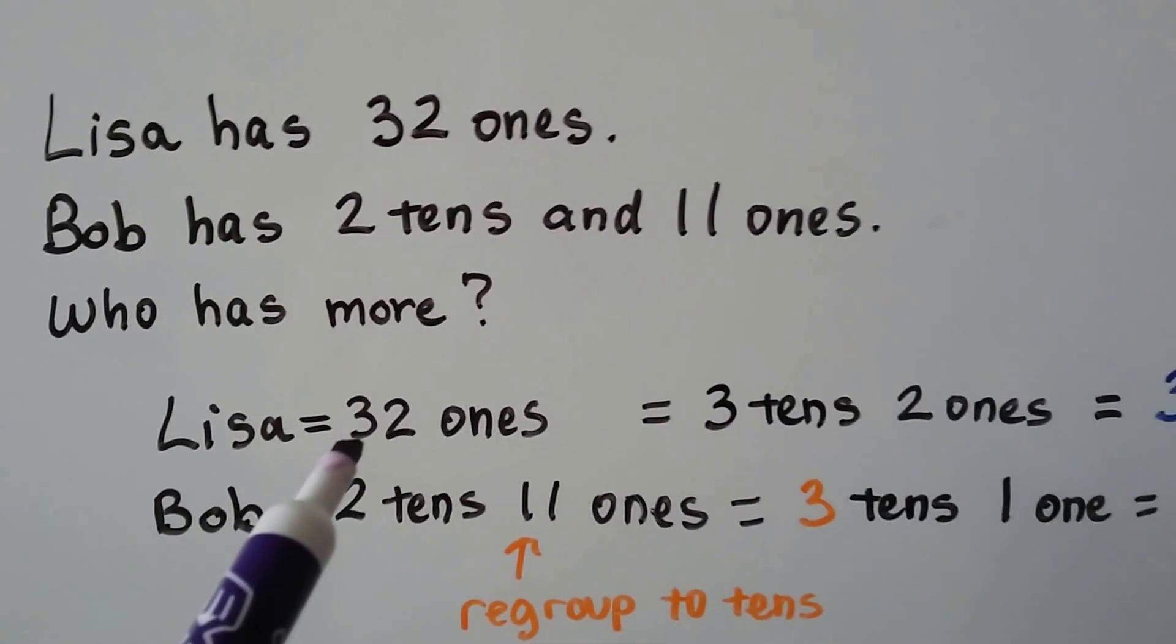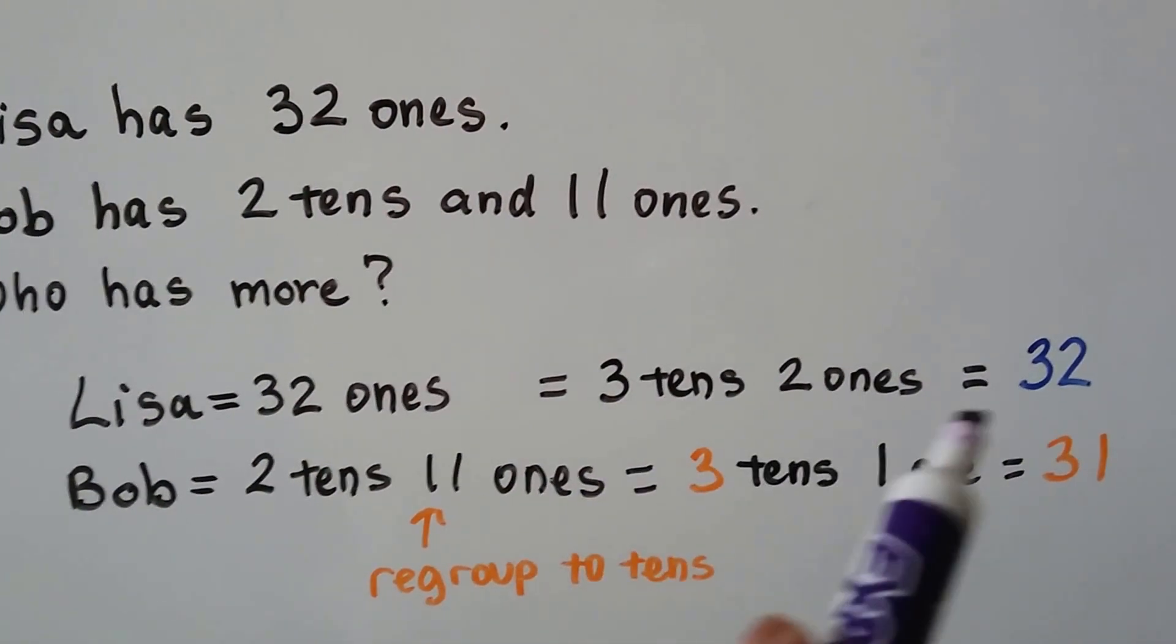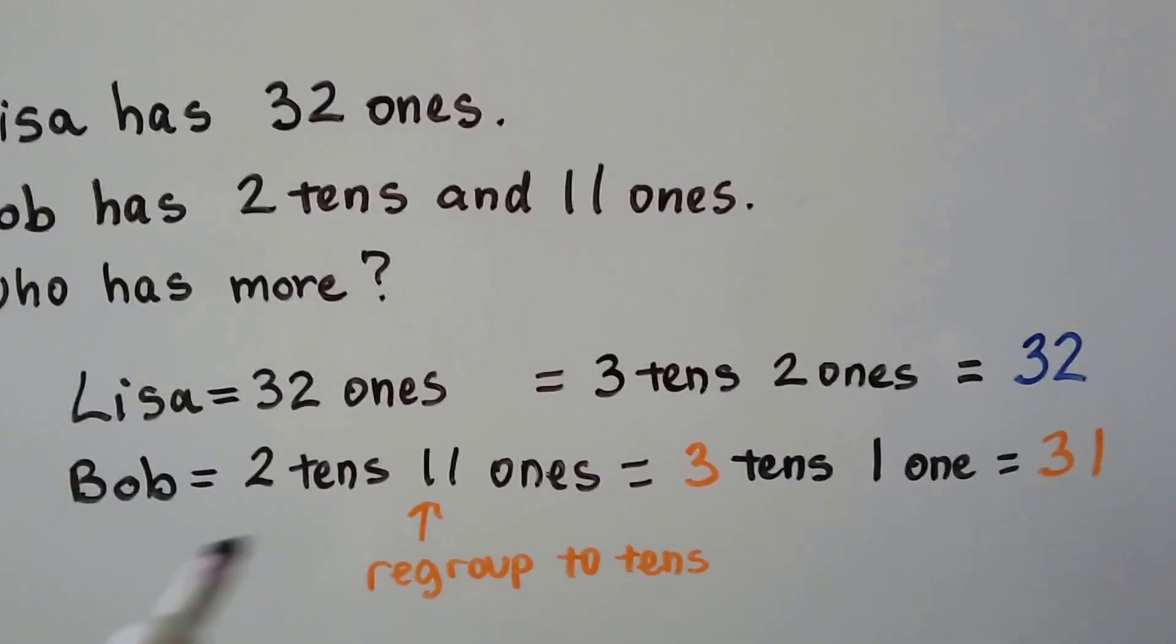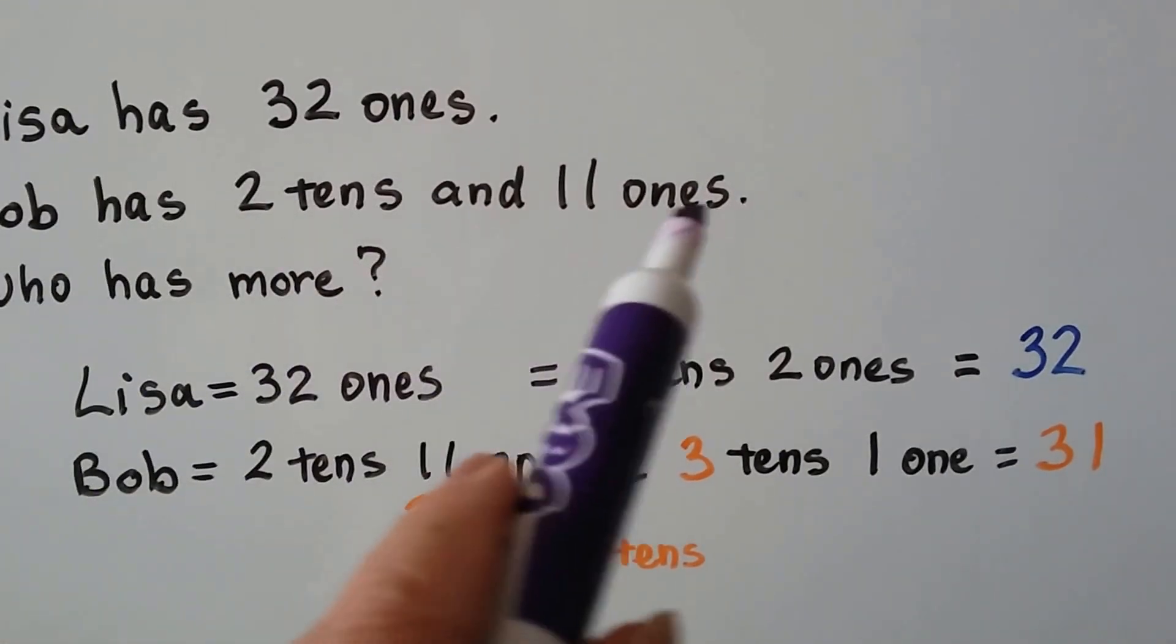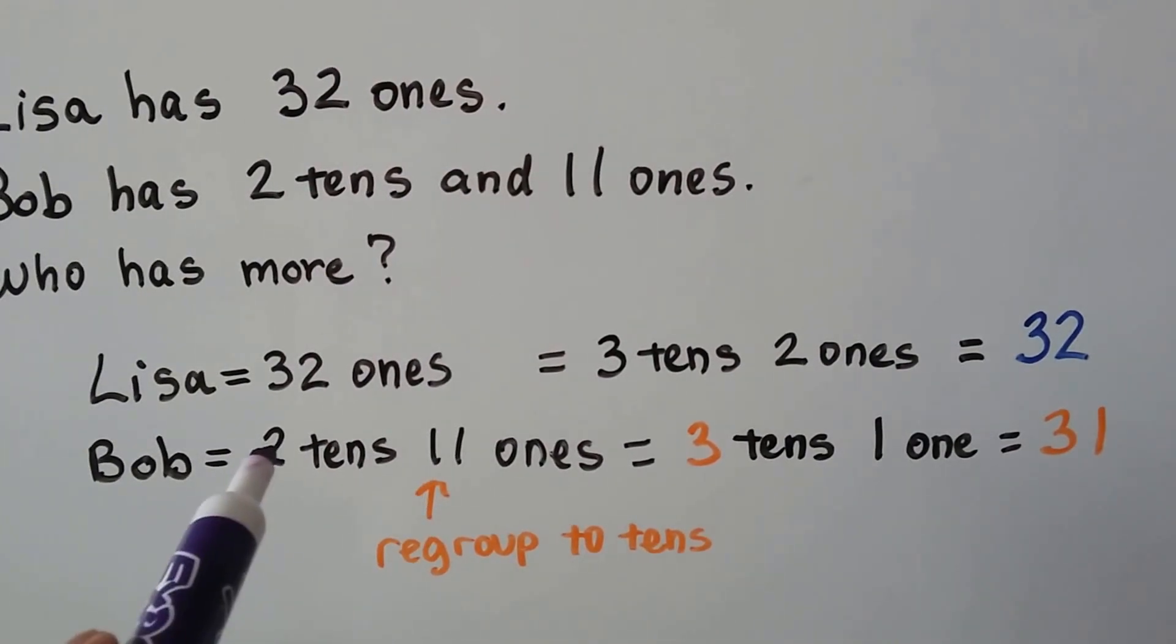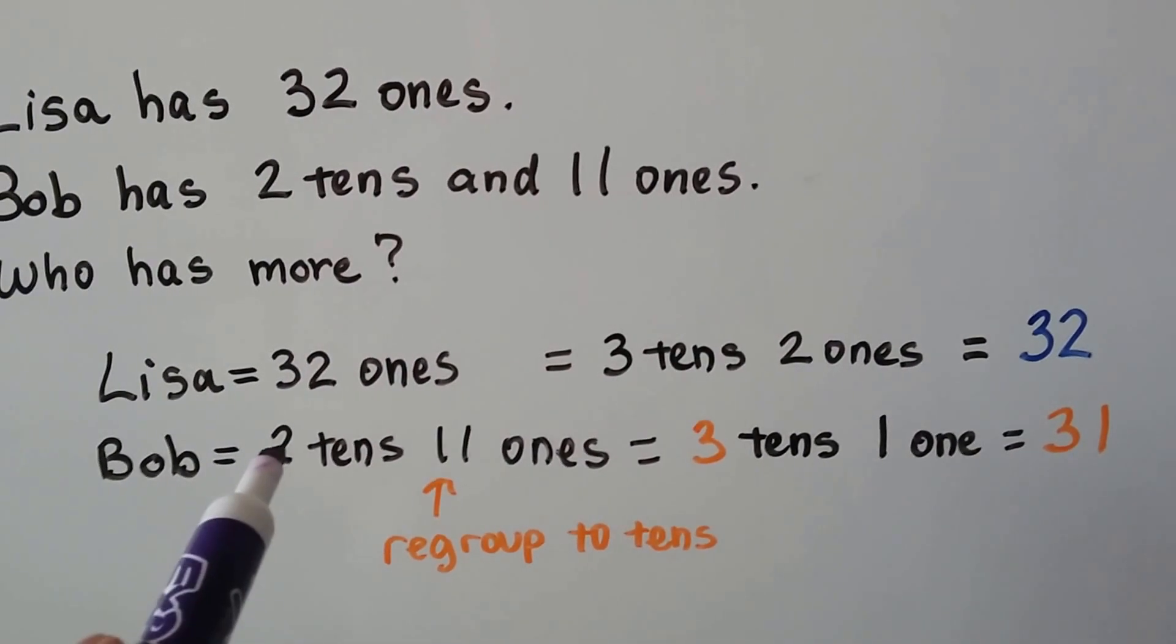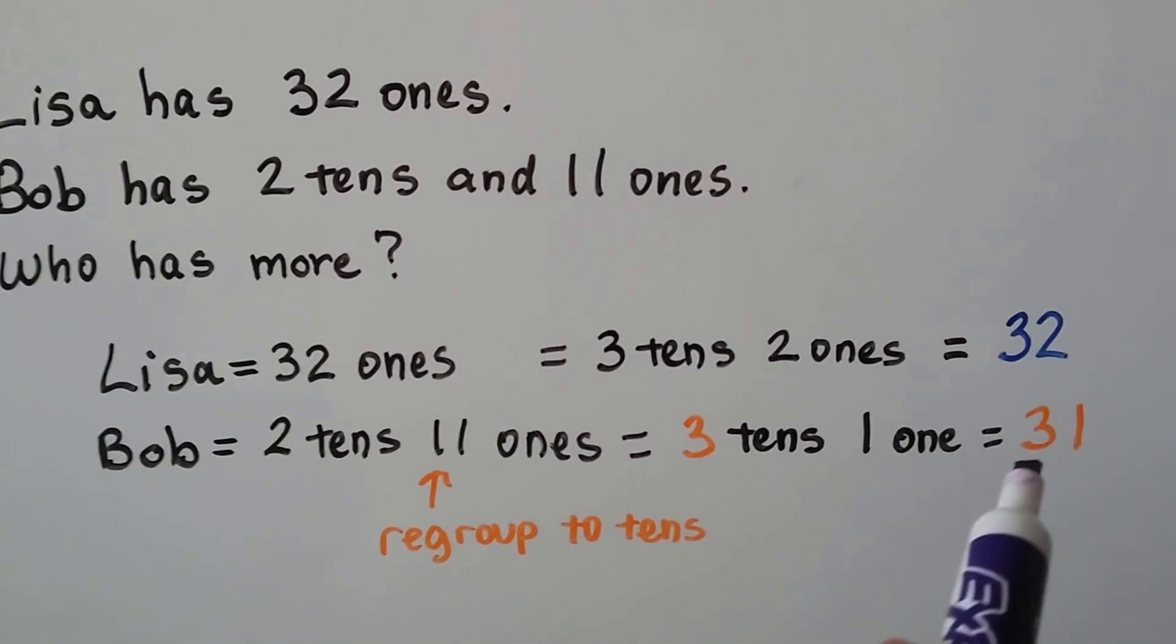Lisa has 32 ones. That's 3 tens and 2 ones. That's 32. Bob has 2 tens and 11 ones. That's what it tells us. We can regroup this to the tens place, can't we? So Bob will have 3 tens and 1 one. He'll have 31.